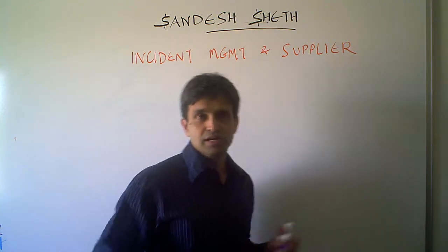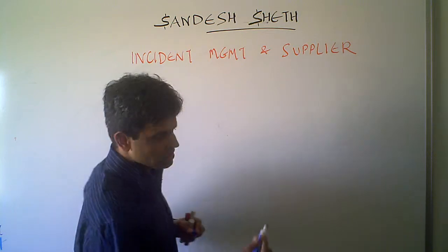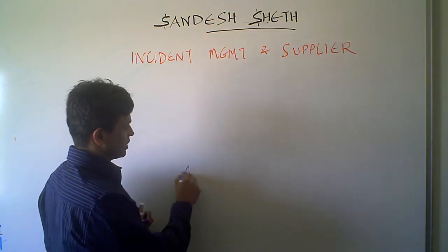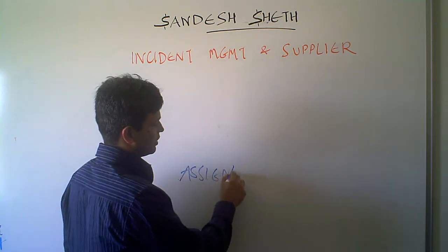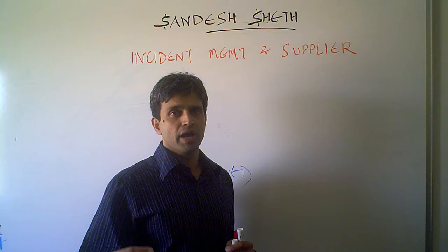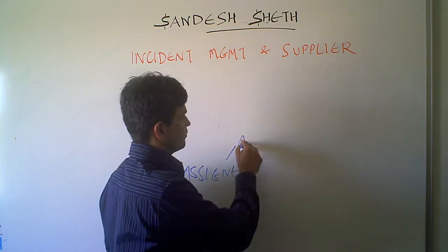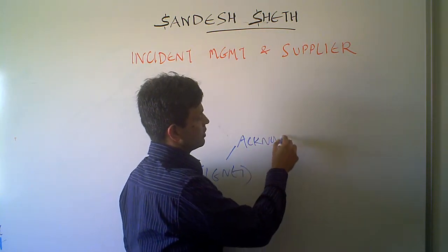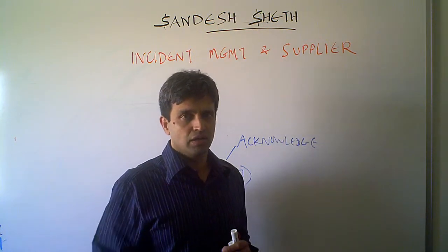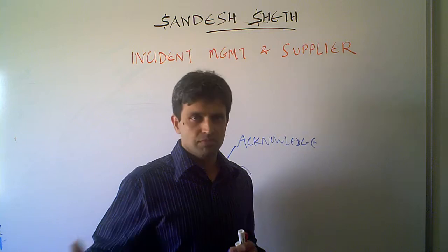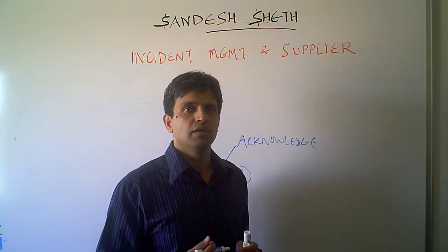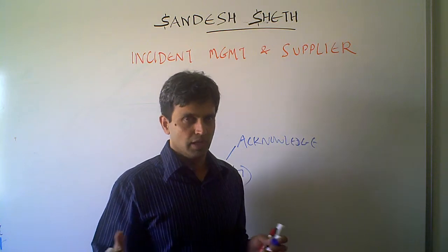It starts off when you actually assign an incident to the third party service provider or the supplier. Once you have assigned it, the supplier is supposed to acknowledge it. The assignment can be in the form of a mail or SMS going to the supplier, or any other form which has been mutually coordinated and communicated.